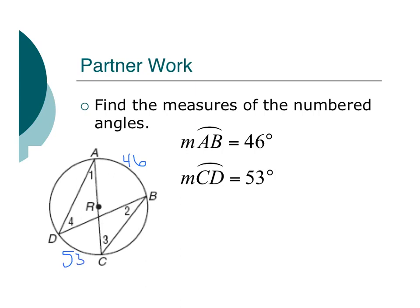So let's see here. If I'm looking to find angle 1, angle 1 is going to be half of 53, which is 26.5. Because angle 1 intercepts this arc right here, CD.